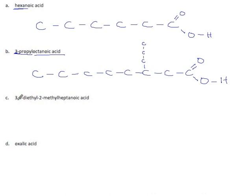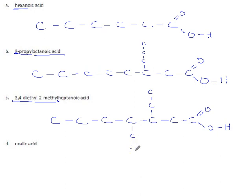Three, four diethyl, two methyl heptanoic acid. Heptanoic acid is seven carbons. Two, three, four, five, six, seven. That's heptane. Now it's heptanoate. Now it's heptanoic acid. And now we attach onto it three, four diethyls. So this is carbon number one, two. Carbon number three gets an ethyl group. Carbon number four gets an ethyl group. And then the second carbon here gets a methyl group.